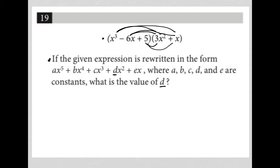Right, so d just being the x squared term. So I am going to rewrite this, x cubed minus 6x plus 5 and 3x squared plus x. And let's just distribute everything.